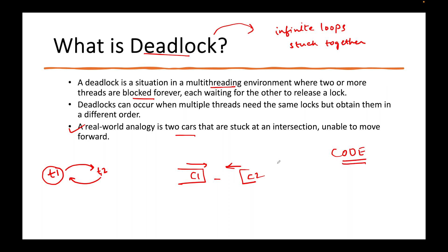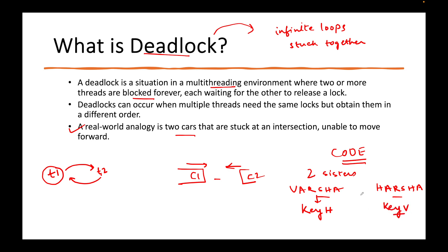We are going to take a real world example of two sisters called Varsha and Harsha. They are having a fight where Varsha has acquired the key of Harsha's room (key H), and Harsha has acquired the key of Varsha's room. Now Varsha says: 'Hey, you have taken my room's key — please release that.' Harsha says: 'No, you have taken my key. You first release.' If Varsha had surrendered her key to Harsha, Harsha would have given the key back to Varsha and both would be unblocked. But because neither is willing to release, Varsha is waiting on Harsha and Harsha is waiting on Varsha — this is the deadlock we are going to write Java code for.